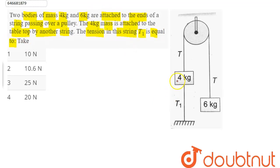These are the two masses 4 kg and 6 kg attached to the ends of a string passing over a pulley. This 4 kg is attached to the tabletop by another string. We need to find this tension T1.